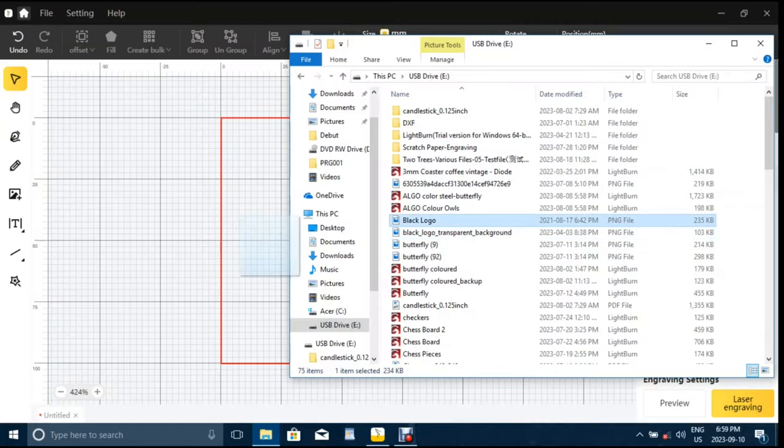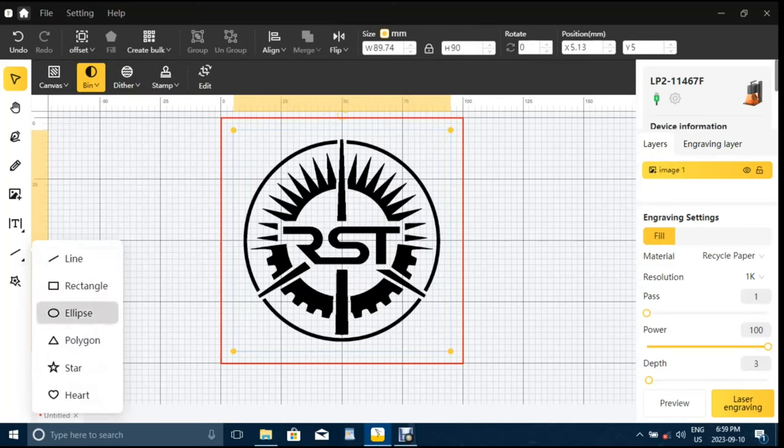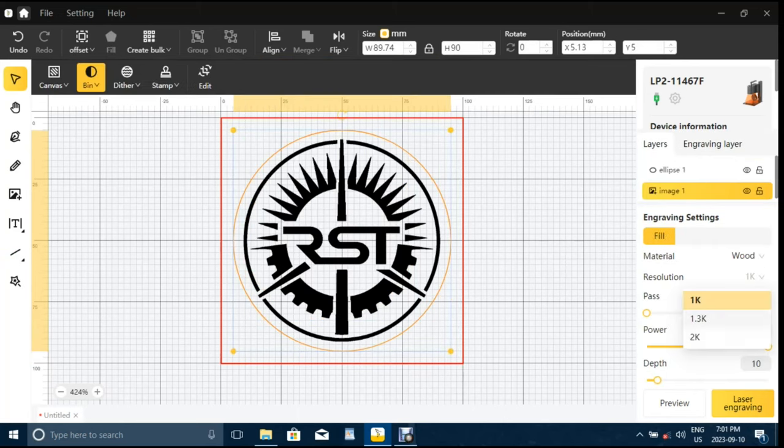Like the other engravers, the LP2 can be controlled using Laserpecker's smartphone app or their design space software for PC. Both are easy to use and offer loads of features to help increase both your productivity and creativity.